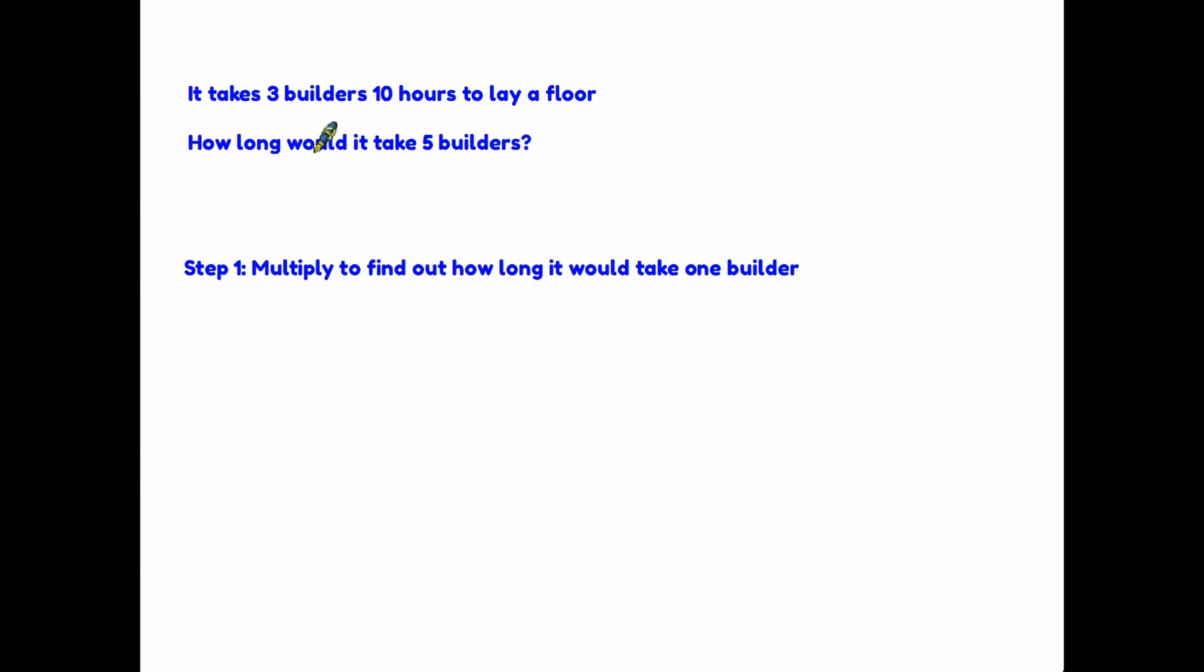So step one: multiply to find out how long it would take one builder to lay a floor. Because, if you look at the first line, three builders, ten hours. So each builder is working for ten hours. So the total number of hours being worked, three men are working ten hours each. So altogether, it's thirty hours. So that's how long it would take one builder. Now that we have this information, if we know that one builder takes thirty hours, we now move to step two. And that is to divide to find our answer.